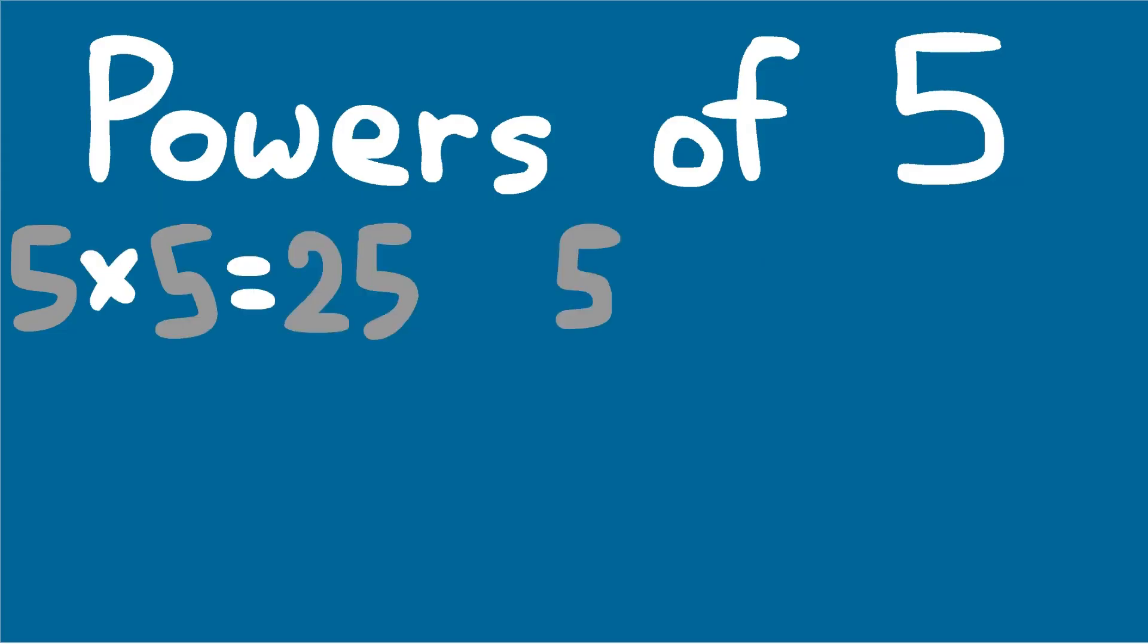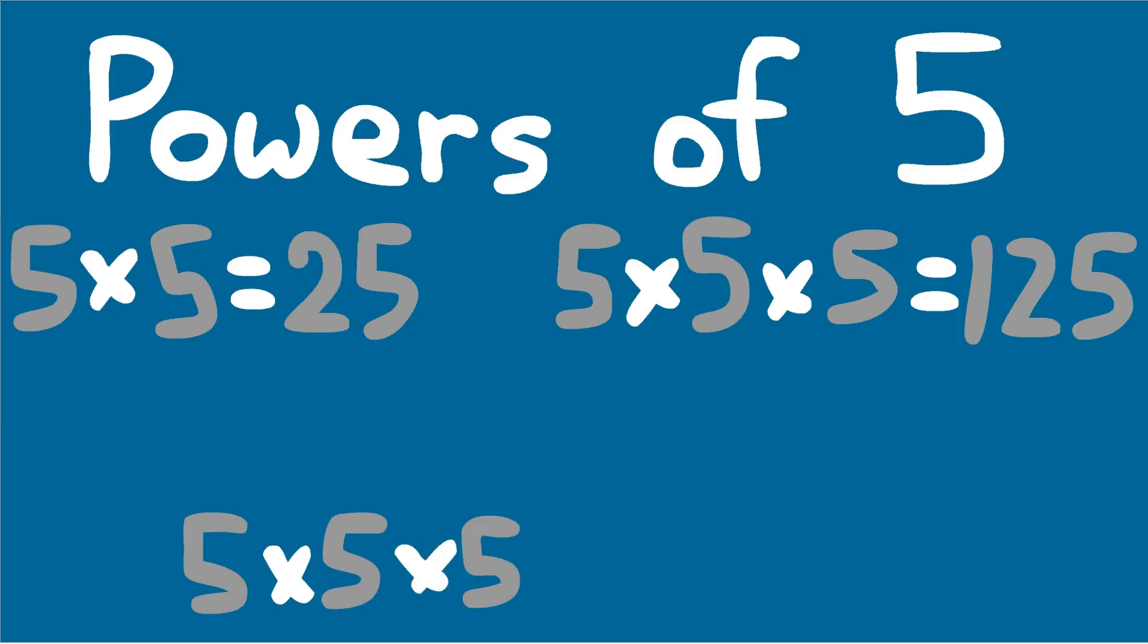let's look at powers of the number 5. 5 times 5 is 25, 5 times 5 times 5 is 125, 5 times 5 times 5 times 5 is 625.